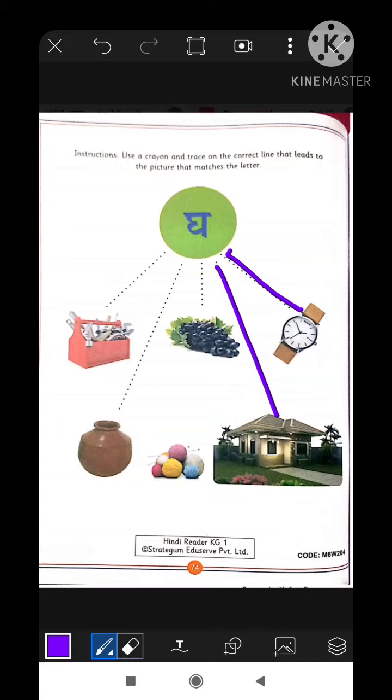The third picture is of grapes. Grapes ko Hindi mein anggur bolta hai. So it does not begin with Gha. So we are not going to match them.